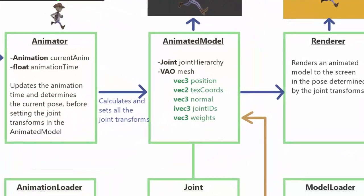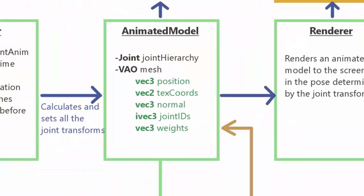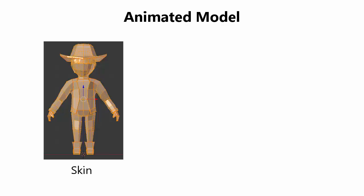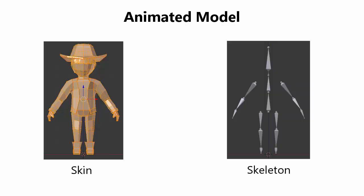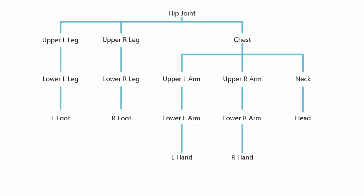So let's start off this week by having a look at how an animated model is represented. As we've already seen, an animated model is made up of two components: the skin and the skeleton. The skeleton is made up of multiple bones, or joints as they're called in the code. I'll be covering the implementation of joints in a lot of detail in an upcoming tutorial, but for this week I just wanted to talk about how all the joints in a skeleton are arranged in a hierarchy, and that each joint can have a parent joint and multiple children joints.